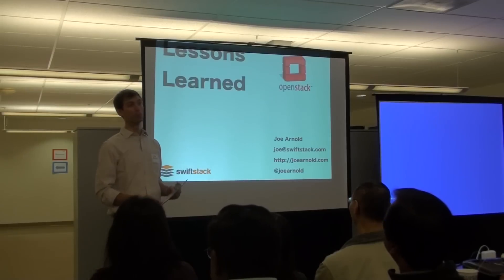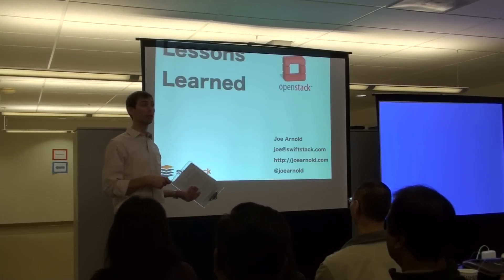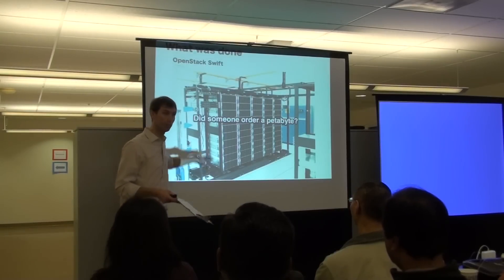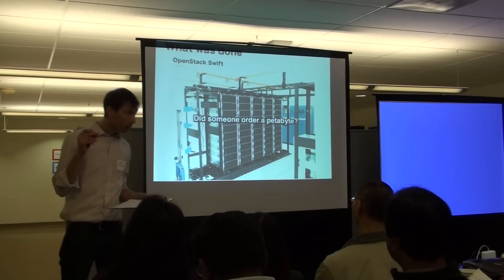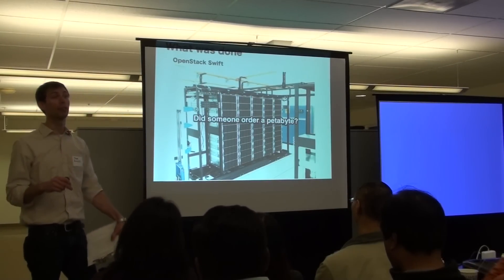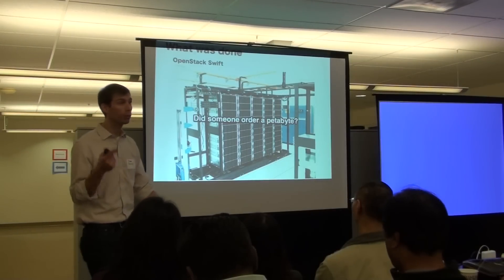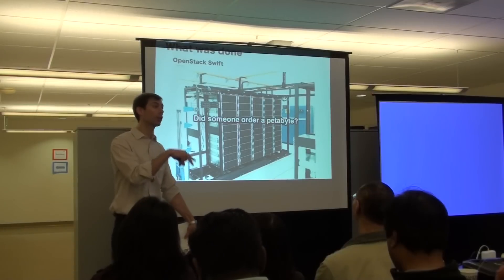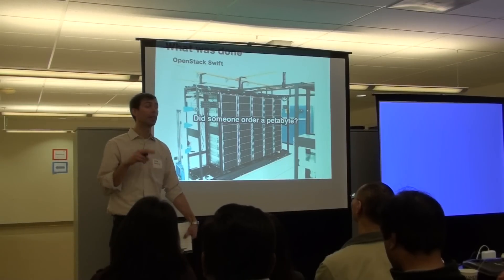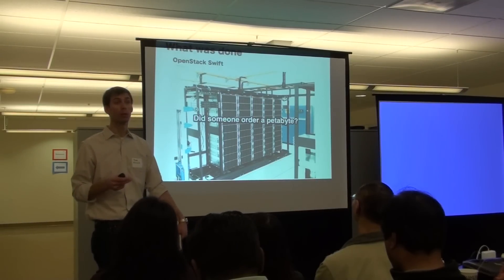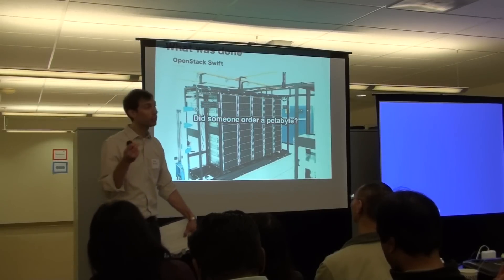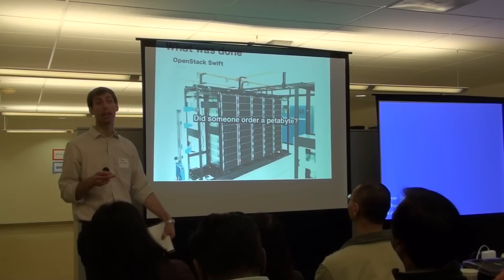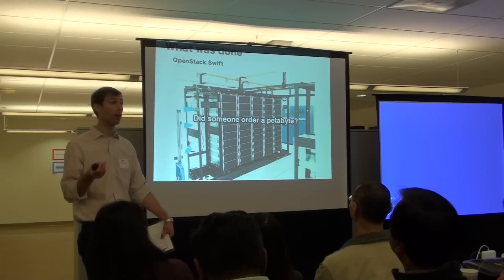I'm currently doing private cloud storage deployments with a company called SwiftStack. When OpenStack was announced, there were two components. The first component was OpenStack Compute, which is called Nova. And the other project was called OpenStack Swift — an object storage system which came out of Rackspace. This is the same code that Rackspace is using in production today to service their product Cloud Files.